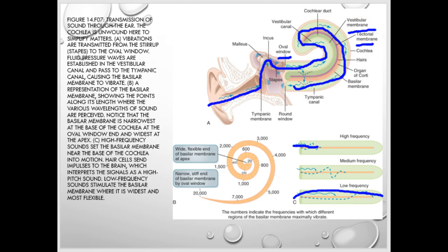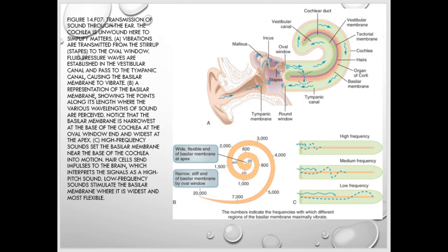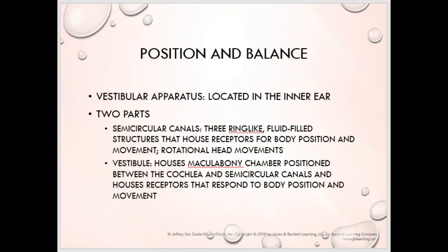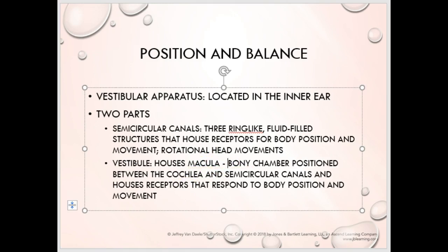For position and balance, we have the vestibular apparatus located in the inner ear. It has two parts: the semicircular canals — three ring-like structures with fluid that sense rotational head movements — and the vestibule, which is a bony chamber. The semicircular canals and the vestibule are carved-out areas within the temporal bone of the skull.